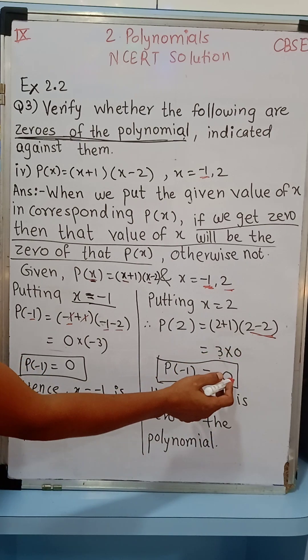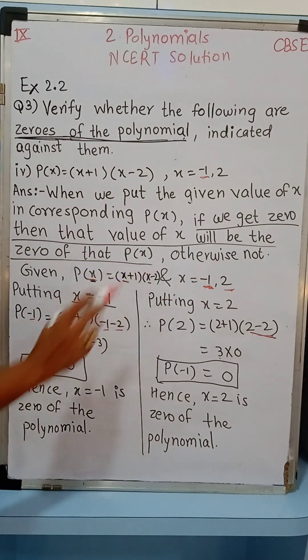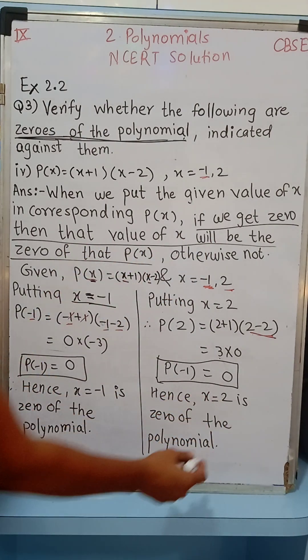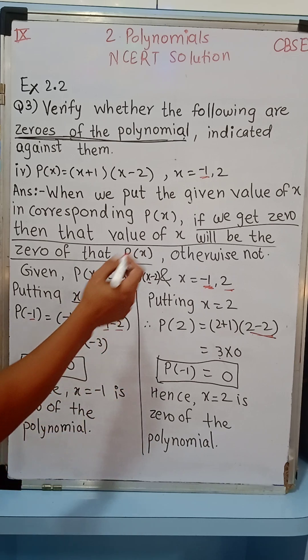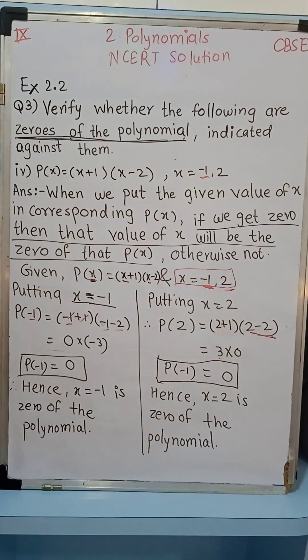So P(2) = 0. Again, we get 0, then that value of x is the zero of the P(x). Hence, x = 2 is the zero of the given polynomial. And therefore, x = -1 and x = 2, both are the zeros of the given polynomial.